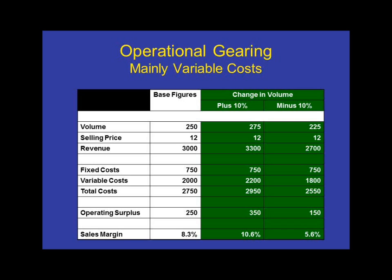If, however, demand falls by 10% from the base figure, look what happens to the sales margin. In other words, for every $100 of sales, the operating profit is now $5.60. Two figures I want you to pay particular attention to are the 10.6% and the 5.6% — in other words, a spread of 5% between a best-case scenario and a worst-case scenario.